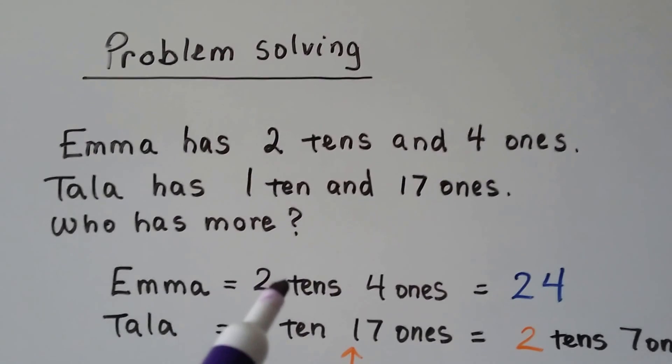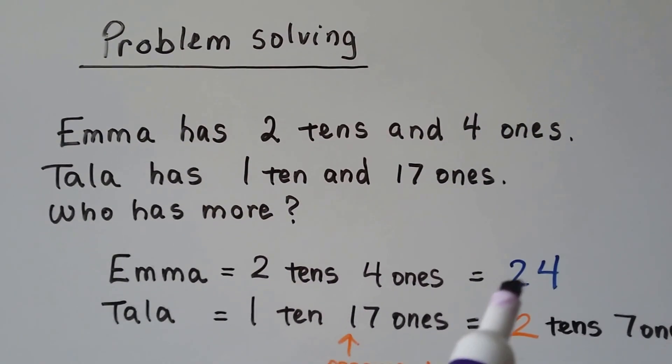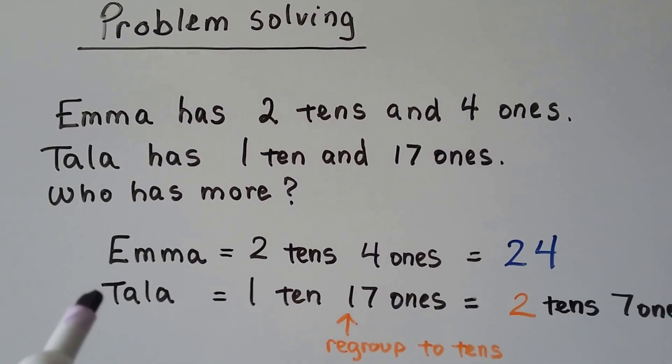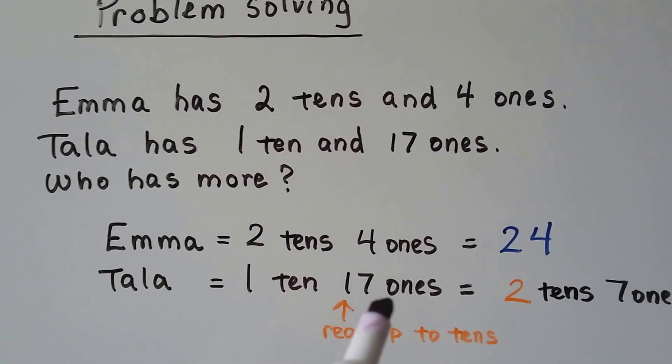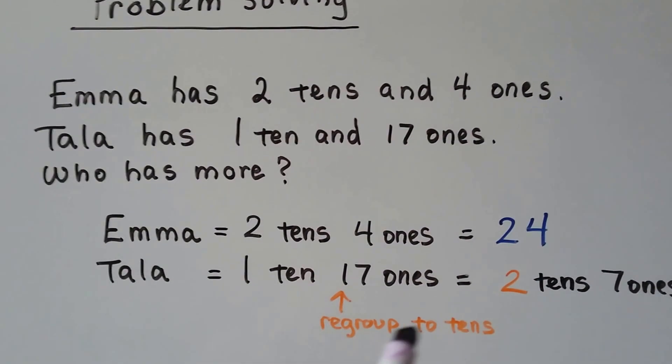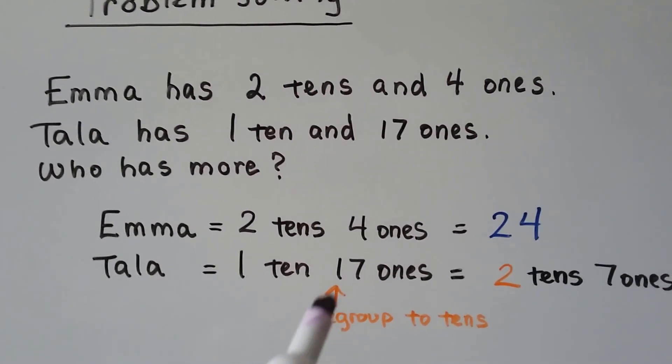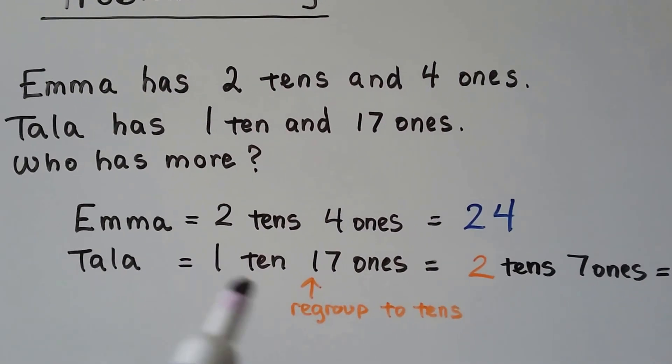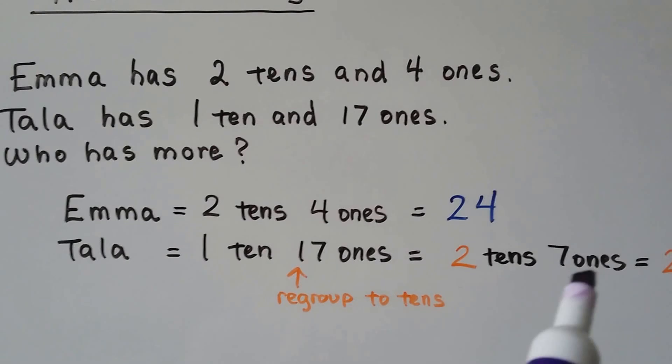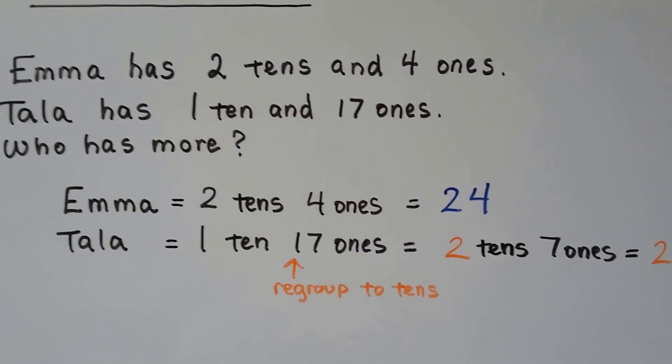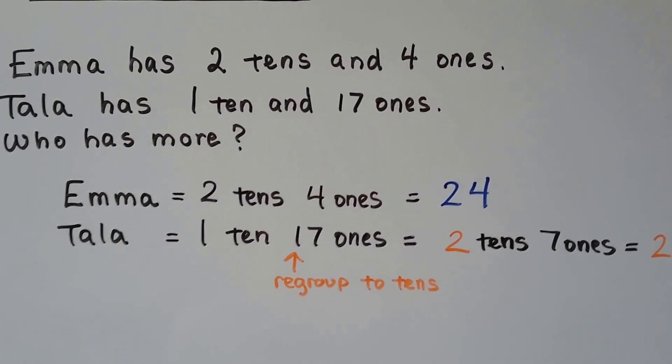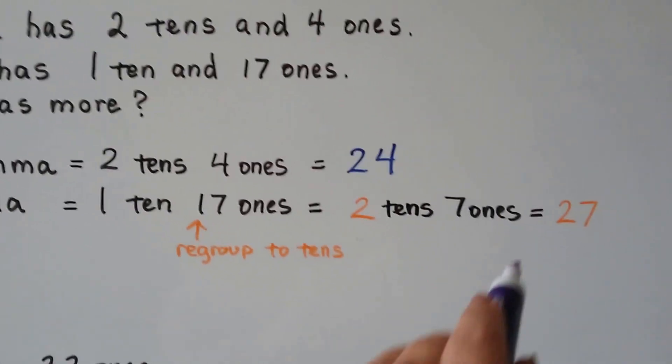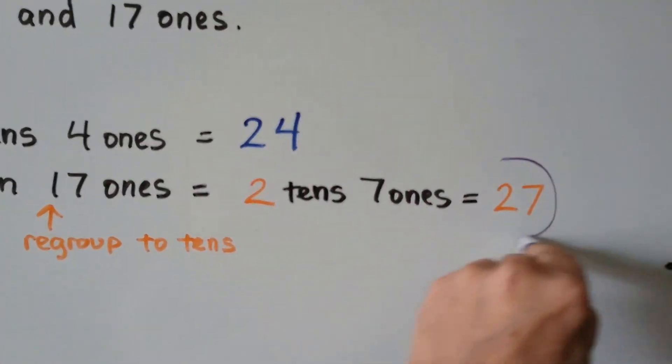Well, Emma has 2 tens and 4 ones. That's 24. Tala has 1 ten and 17 ones. We can regroup that 10 to this 10. So she would have 2 tens and 7 ones. That's 27. So who has more? 27 is more, isn't it? So Tala has more.